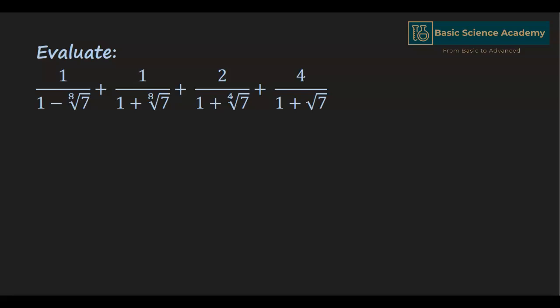In this video we are going to evaluate 1 divided by 1 minus 8th root of 7, plus 1 divided by 1 plus 8th root of 7, plus 2 divided by 1 plus 4th root of 7, plus 4 divided by 1 plus root 7. We will start from the first two terms, which have 1 minus 8th root of 7 and 1 plus 8th root of 7 in the denominator, which are in the form a minus b and a plus b.